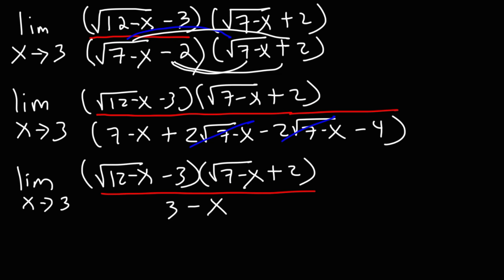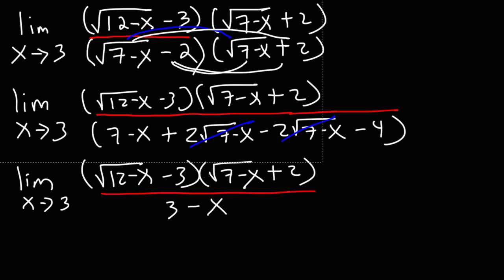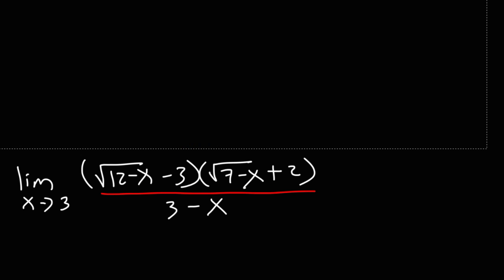At this point, we cannot use direct substitution. If we were to plug in 3 into this expression, we're going to get 3 minus 3, which is 0, and having a 0 in the denominator of a fraction makes the entire expression undefined. So we can't do anything right now with that. But there is something else that we can do.